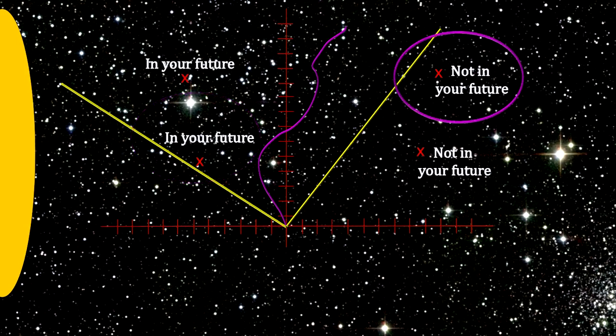And we see that points that were reachable inside the cone now fall outside the cone and are no longer reachable. This is light cone tipping.